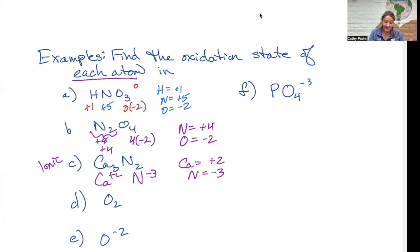The next two are easy because they're alone. So I either take the charge that's written on it or it's zero. So O2 is alone here and there's nothing written on it. Here oxygen's alone but there's something written on it.